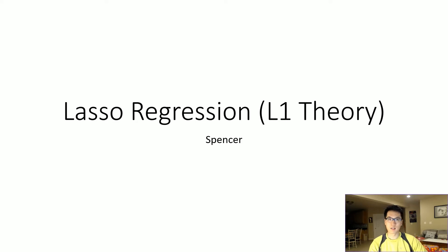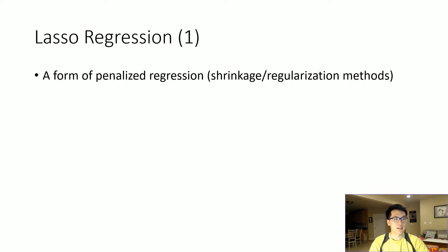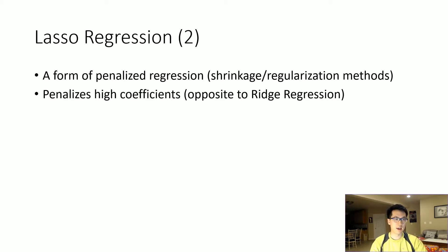So in slide one, lasso regression is essentially a form of regularization. It's very similar to ridge in that it actually penalizes the high coefficients, instead of ridge where it penalizes the lower coefficients.